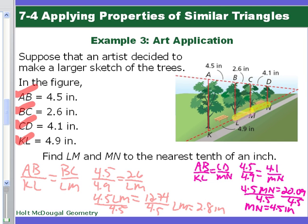So I set up my proportions. AB is to KL as BC is to LM. I filled in my values, cross-multiplied, and that gives me 4.5 LM is equal to 12.74, divide by 4.5, and I find LM is 2.8 inches.